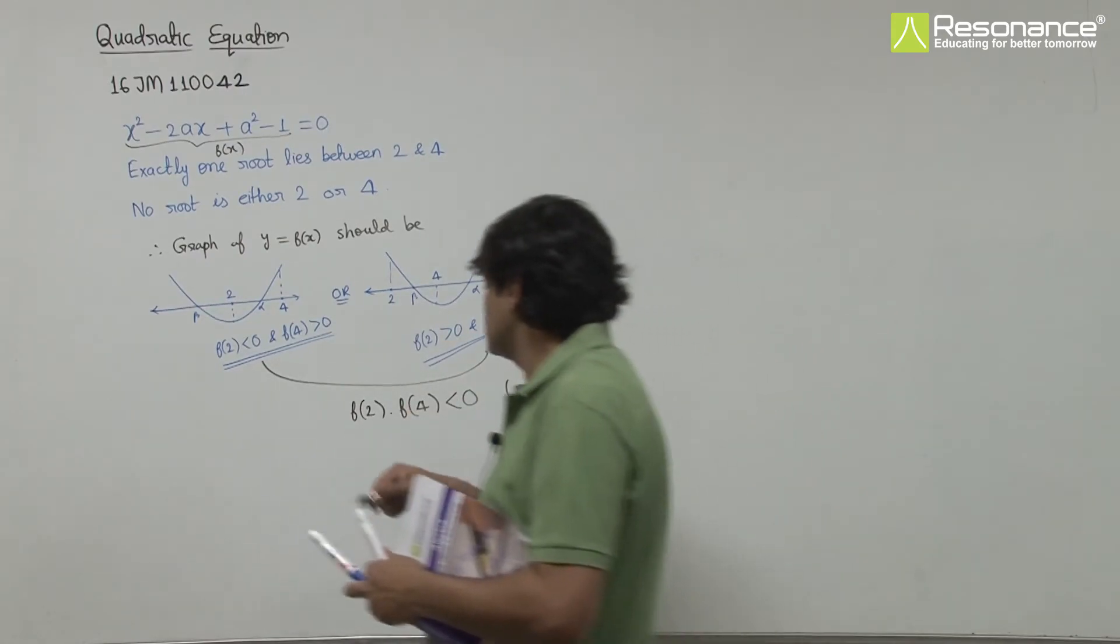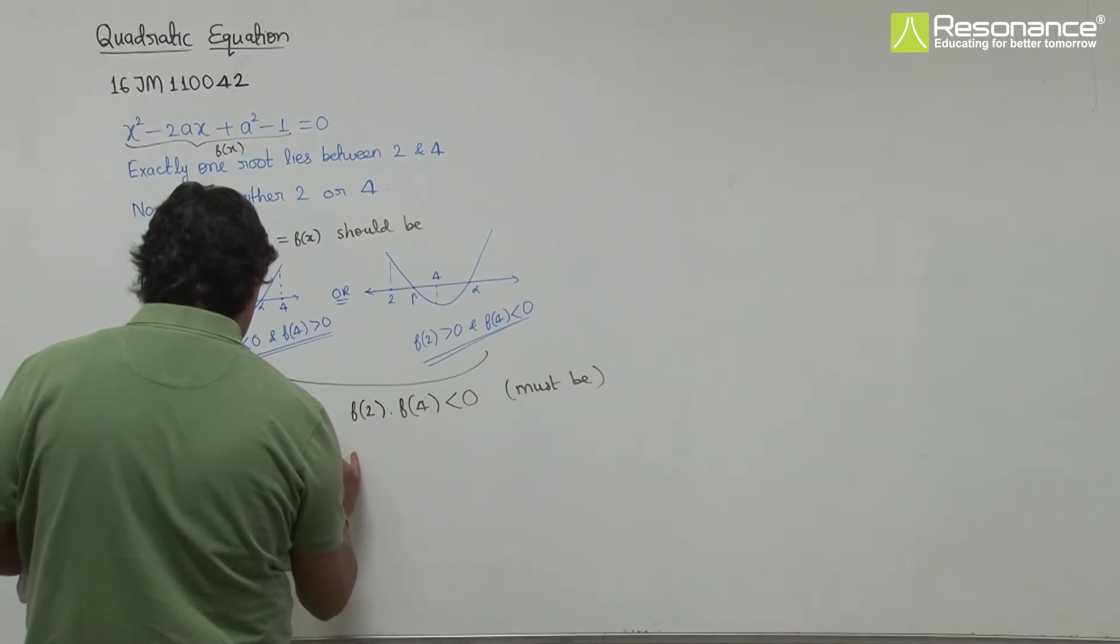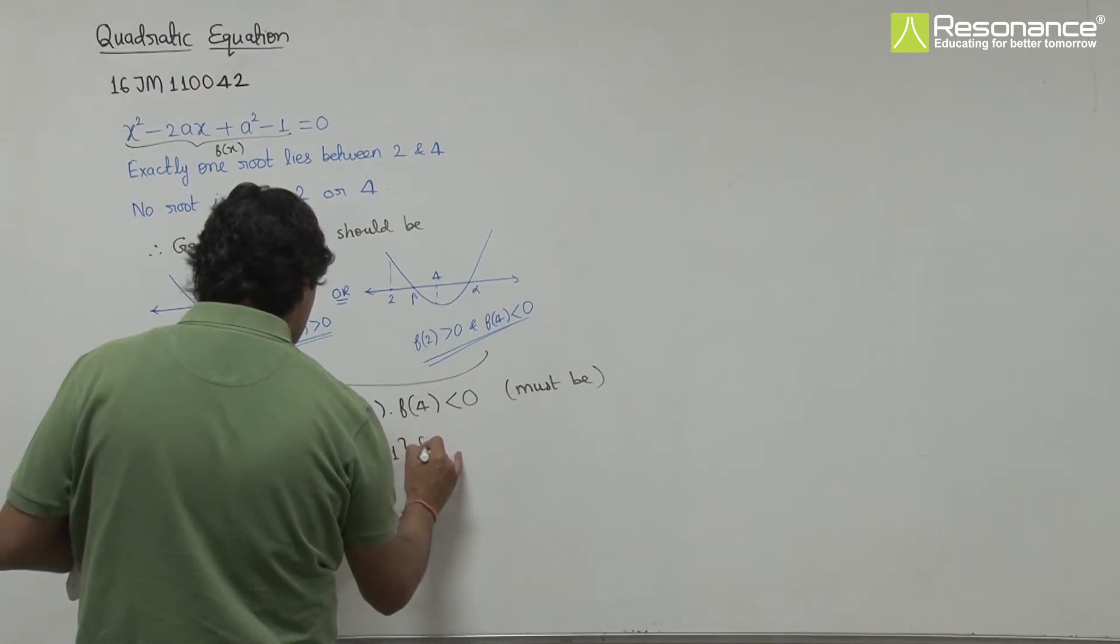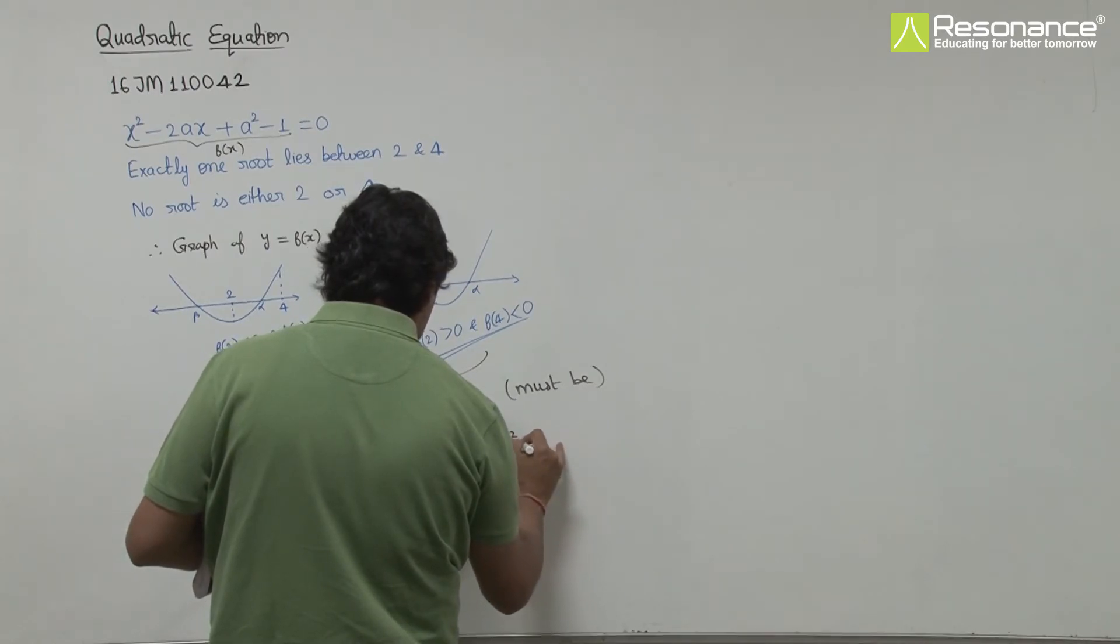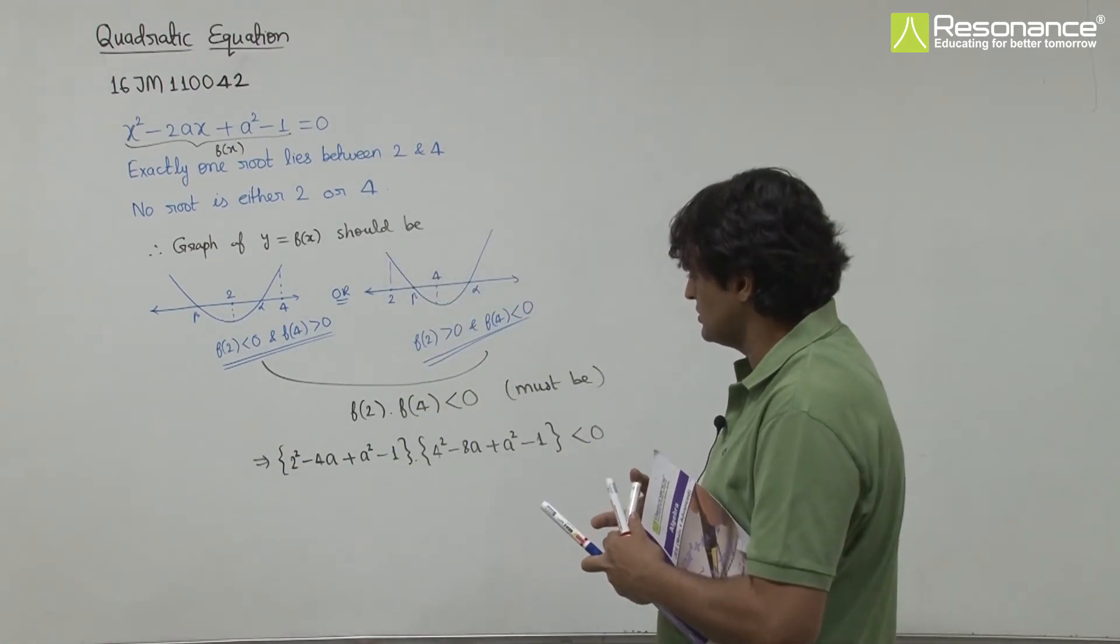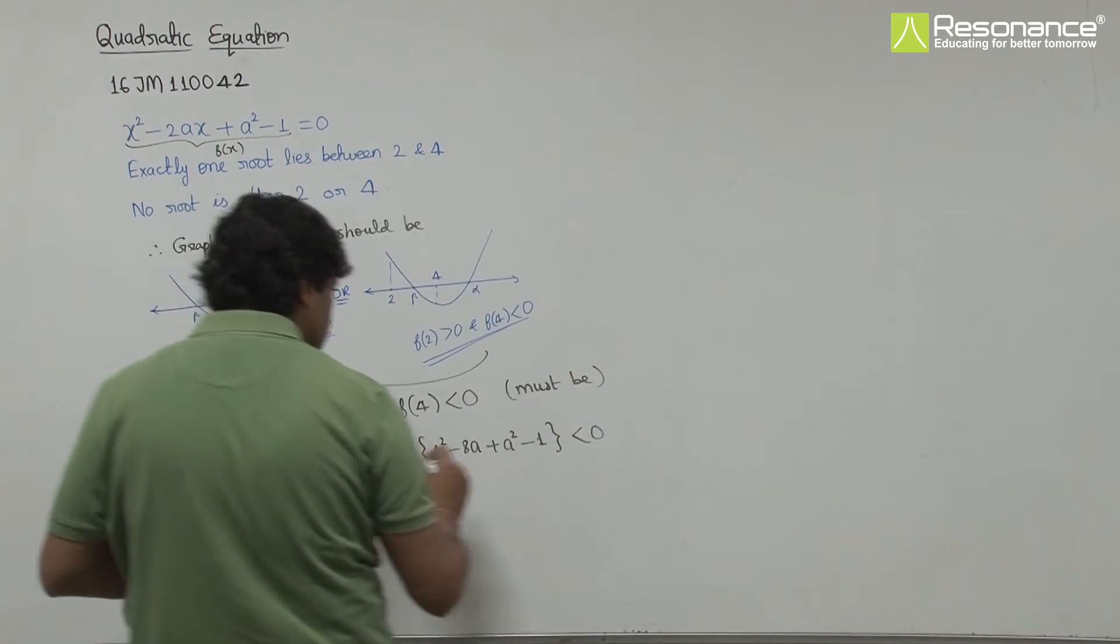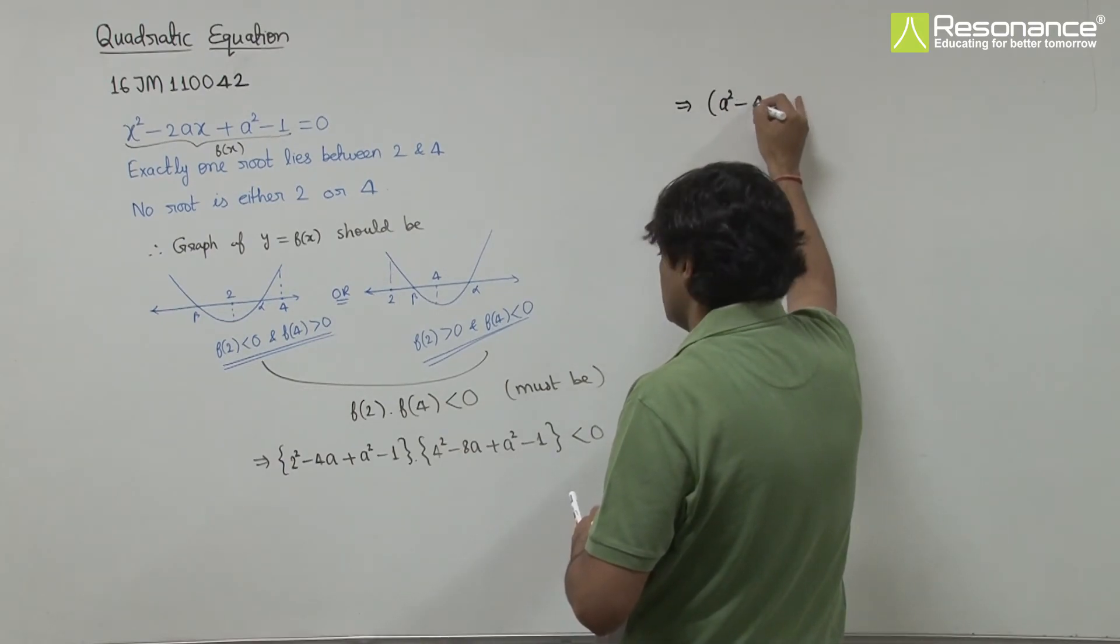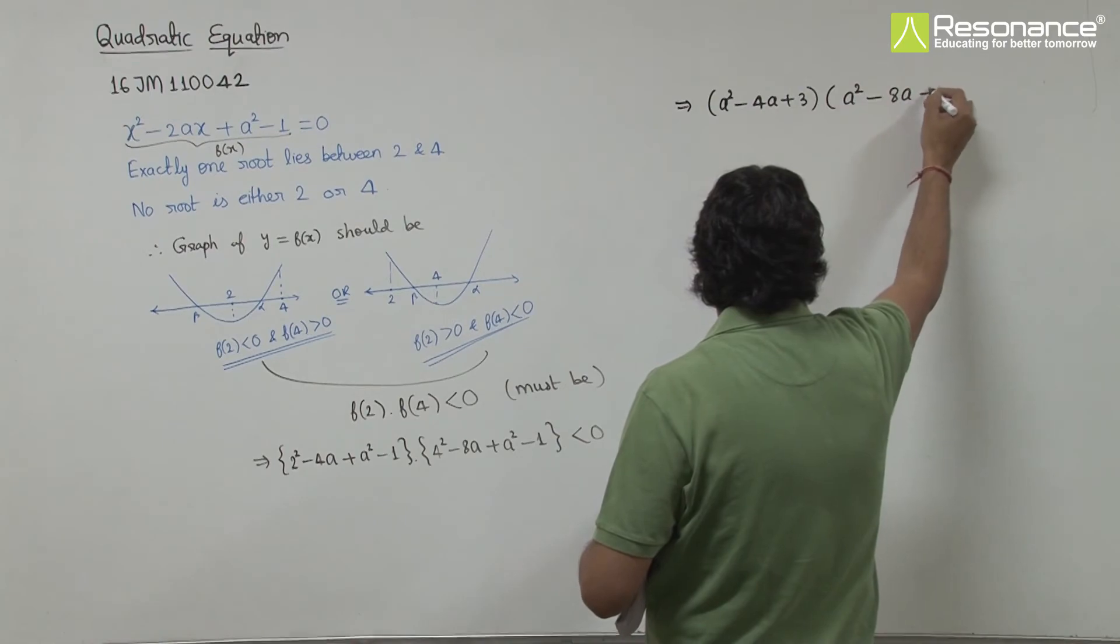We get f(2) by putting x = 2: 4 - 4a + a² - 1. This easily factors to a² - 4a + 3. Then f(4) = 16 - 8a + a² - 1 = a² - 8a + 15. We need f(2) × f(4) < 0.